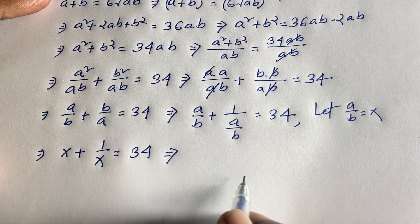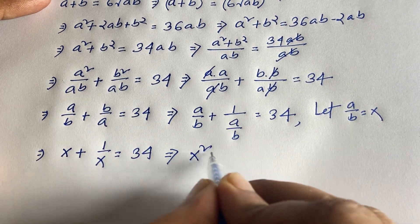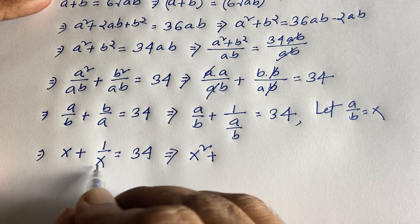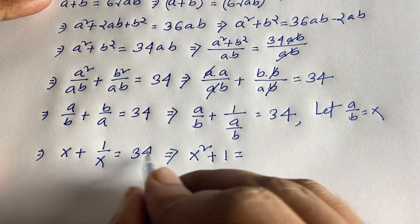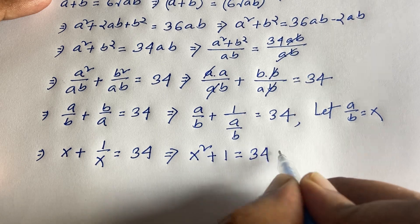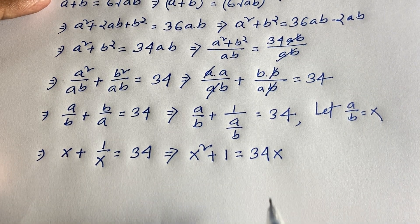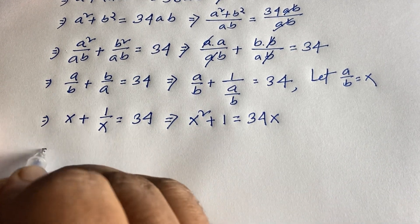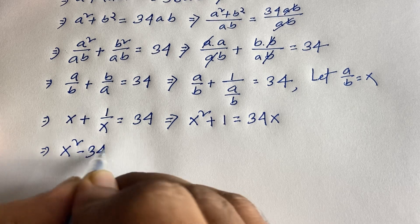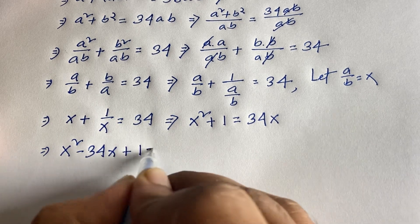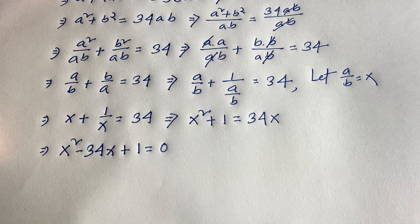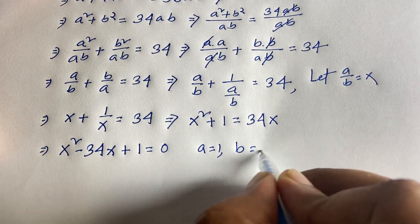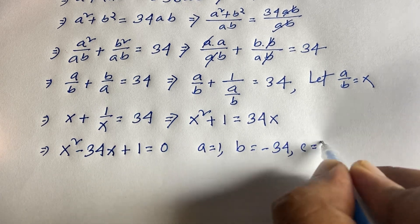Multiplying both sides by x: x² + 1 equals 34x. Rearranging, we get the quadratic equation x² - 34x + 1 is equal to 0. In this expression, a = 1, b = -34, and c = 1.